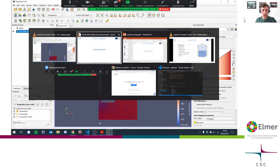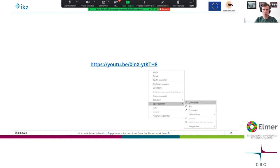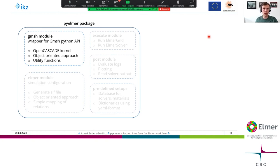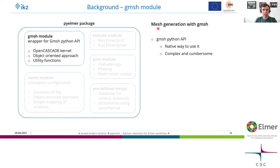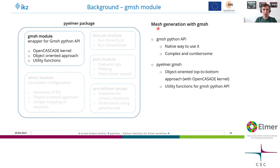Now I'd like to give more background on the Gmesh and Elmer modules. For Gmesh, there are different ways to use it in Python. One is the native way using the Gmesh Python API directly, which I mostly use in the first example, but it can be complex. That's why I created the PyElmer Gmesh module, which uses an object-oriented top-to-bottom approach — I don't define points, but start directly with big shapes and extract boundaries later. I also provide utility functions for the API, like the cut function used in the last example. Another option is PyGmesh, but I decided not to use it.